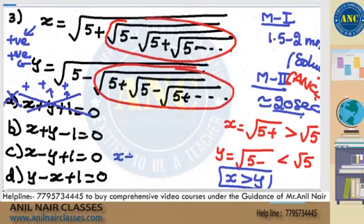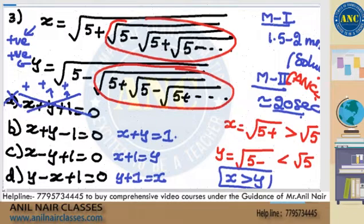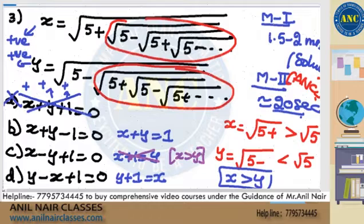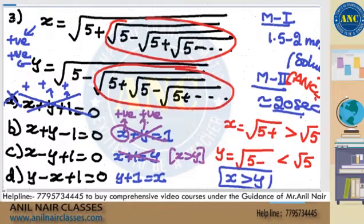Third option: x plus 1 equivalent to y means y is greater than x — but we know x is greater than y, so third option is eliminated. Fourth option: y plus 1 equivalent to x, meaning x is greater than y — this is consistent. Second option: x plus y equivalent to 1. But x is already greater than root 5, which is greater than 2. So x alone is greater than 2; adding a positive y, how can the sum be 1? Second option is also eliminated.